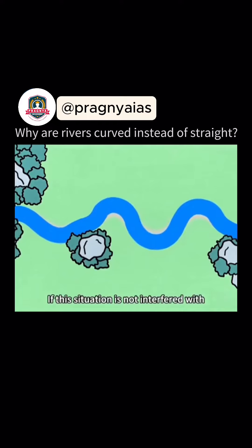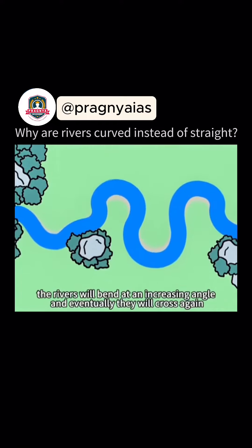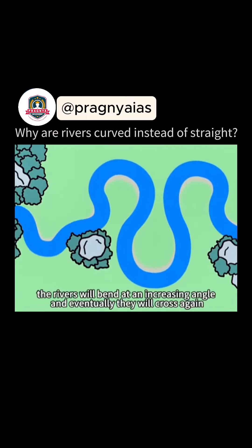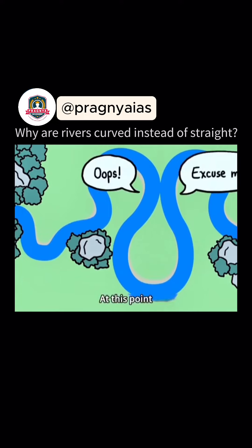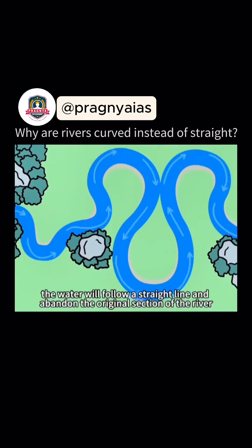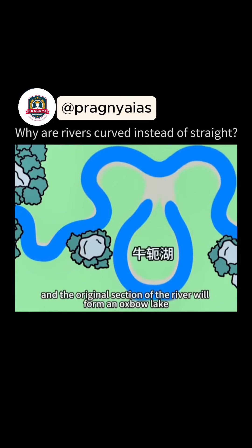If this situation is not interfered with, the rivers will bend at an increasing angle and eventually they will cross again. At this point, the water will follow a straight line and abandon the original section of the river, and the original section of the river will form an oxbow lake.